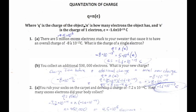For problem 1, part a: there are five million excess electrons stuck to your sweater, giving an overall charge of negative 8×10⁻¹³ coulombs. What's the charge of a single electron? We already know the answer, but this question is here to show we can use the formula Q = ne to solve for different variables.